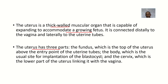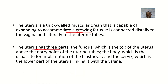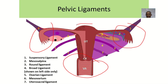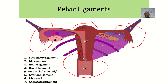The uterus has three parts. First, we have the fundus, which is the top of the uterus — located above the entry points of the uterine tubes. This here is the fundus.